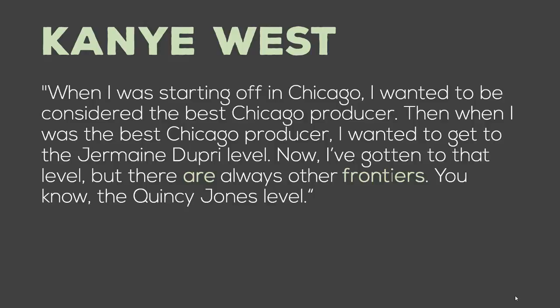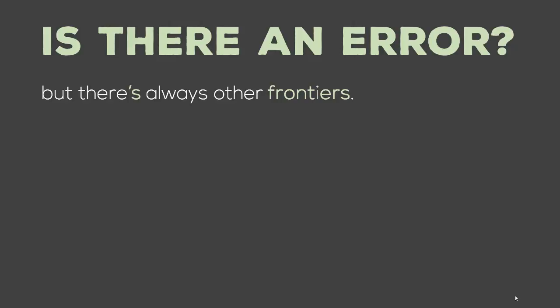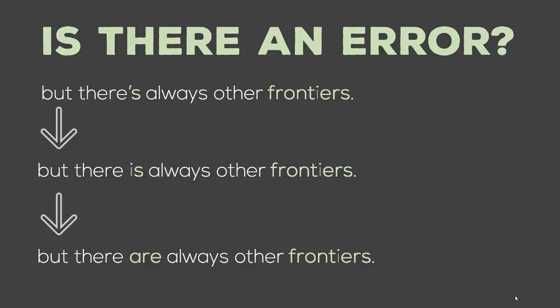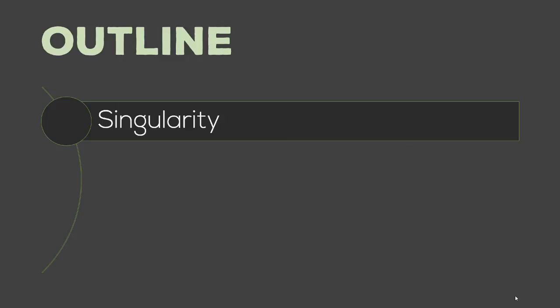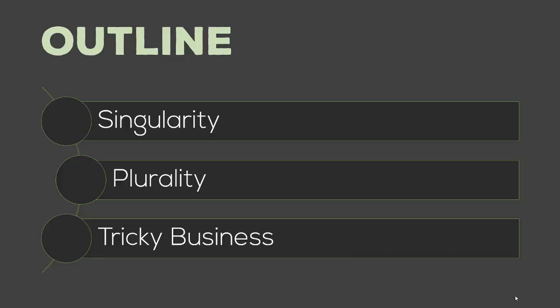If you look carefully, there's actually means there is. When in fact it should be there are, because frontiers is plural. So let's take up our outline where we have singularity, followed by plurality, and last but not least, we have tricky business.